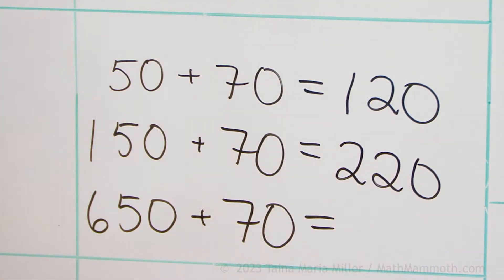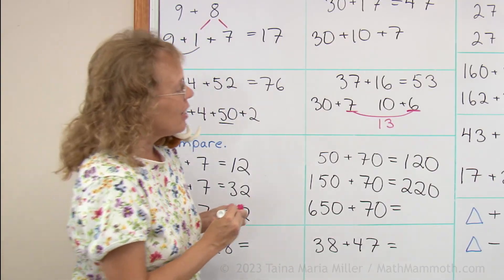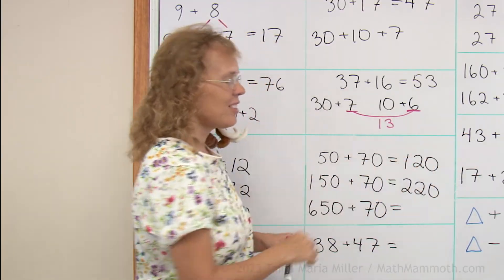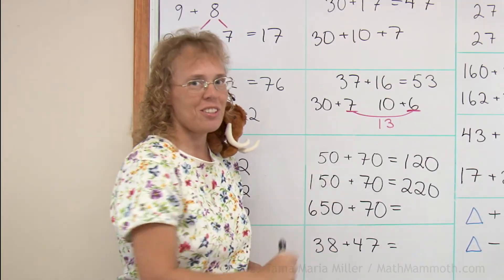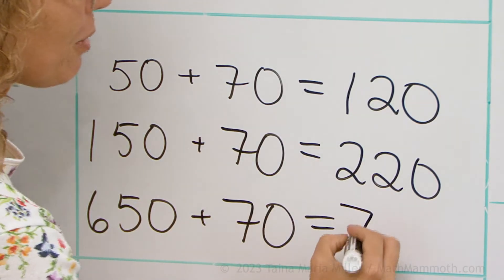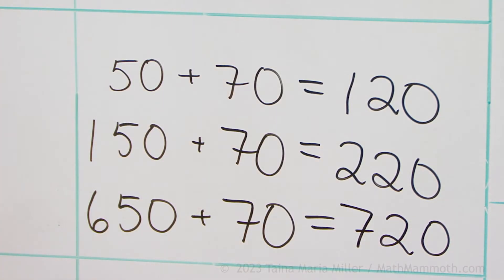Or you can think of it, like I explained here, that since this sum goes 20 over the next 100, this one too goes 20 over the next 100. And this one too, the answer is 720. Notice they all end in 20.